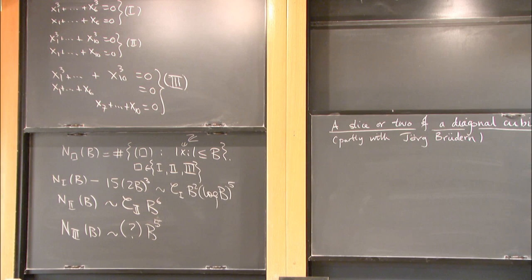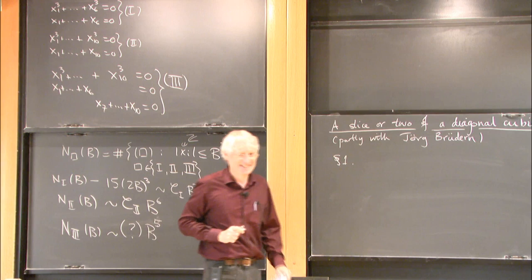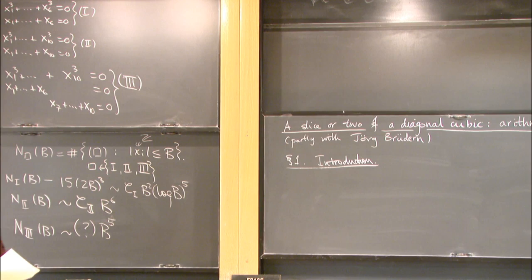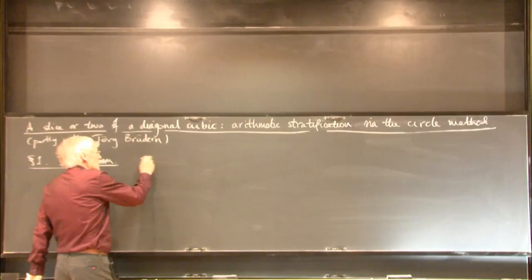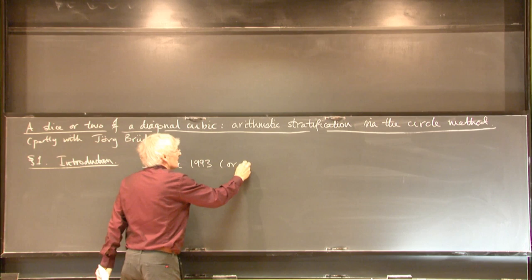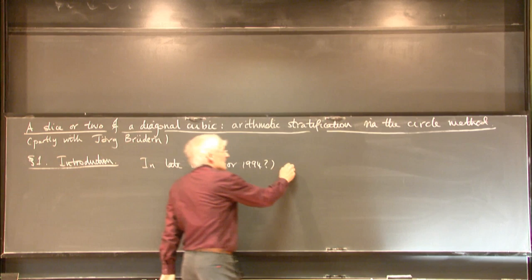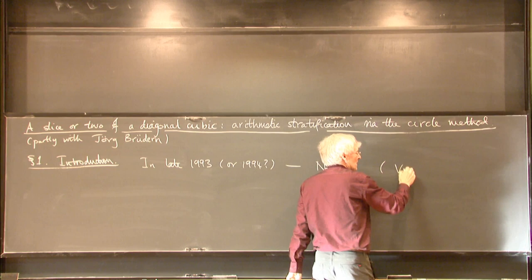Is two easier than one? They involve different kinds of technologies. Let's wind the clock back 25 years ago — when I had recently moved to the United States — to late 1993 or early 1994, when Bob Vaughan and I were working on this. I gave a talk in this seminar on exactly this counting problem N1(B), and this was joint with Bob Vaughan.